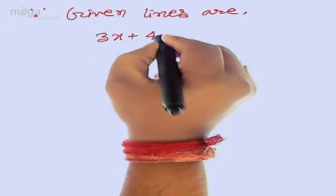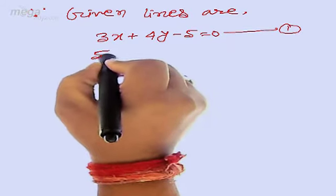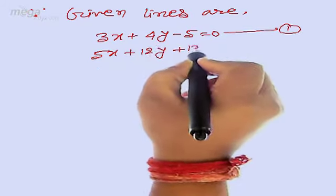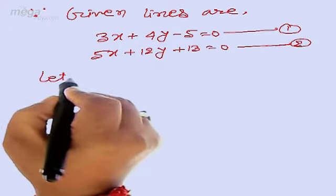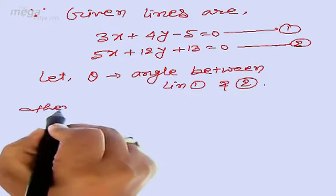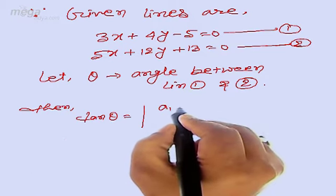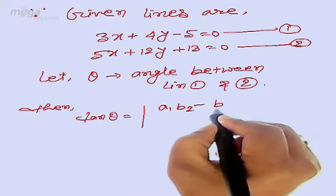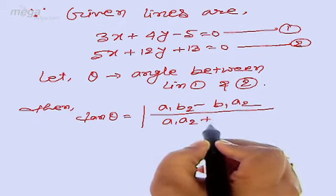I am taking here the given equations. Since the given lines are 3x plus 4y minus 5 equal to 0 and 5x plus 12y plus 13 equal to 0, if we suppose theta be the angle between line 1 and line 2, then we can use the formula: tan theta is equal to mod of a1 b2 minus b1 a2 divided by a1 a2 plus b1 b2.